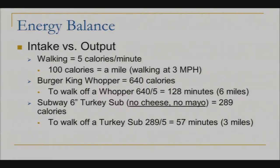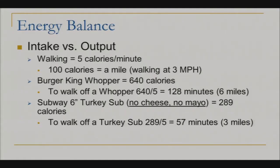That isn't a Sunday stroll in the park — you'd be walking at a pretty good clip. A Burger King Whopper contains 640 calories. So to walk off that Whopper, we divide by 5 calories per minute, and you would have to walk 128 minutes, or 6 miles.